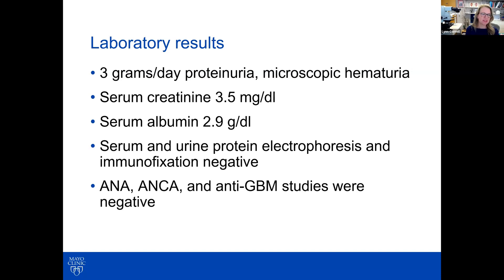Other laboratory results included three grams per day proteinuria and microscopic hematuria. The serum creatinine was 3.5 milligrams per deciliter. Albumin was 2.9 grams per deciliter. Serum and urine protein electrophoresis and immunofixation studies were negative, and the ANA, ANCA, and anti-GBM studies were all negative. So serology is basically negative.